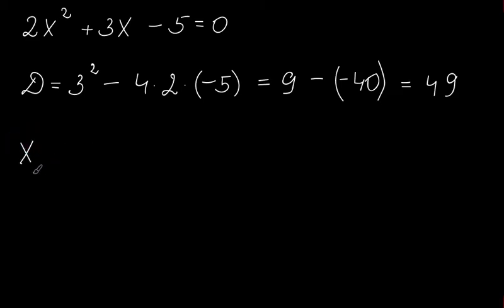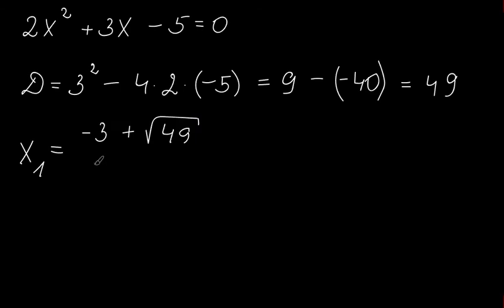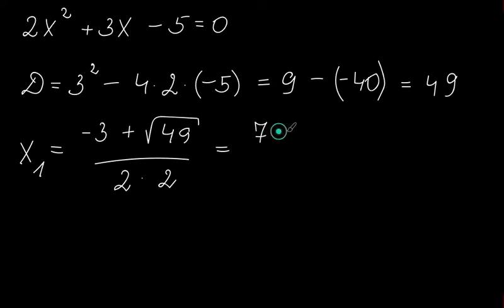So x₁ is equal to negative b — in our case minus 3 — plus the square root of our discriminant 49, divided by 2 times a, which is 2 in our case. The square root of 49 gives us 7. So 7 minus 3 divided by 4, and 4 divided by 4 gives us 1.